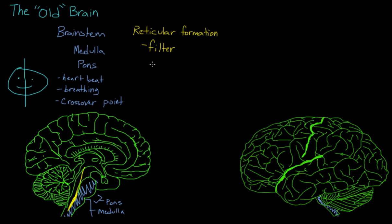the reticular formation extends into an area of the brain known as the thalamus, which we'll be discussing in a moment. And that thalamus acts as a relay station for the brain, sending information to different areas.